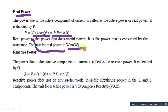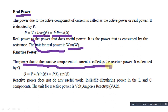The next point is reactive power. The power due to the reactive component of the circuit is called reactive power. It is denoted by Q. The formula of reactive power is Q equal to V into I sin phi. Since V equals I times XL, the reactive power formula becomes I squared times XL times sin phi.